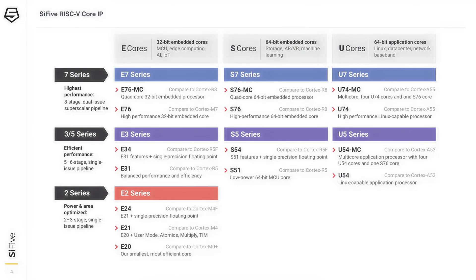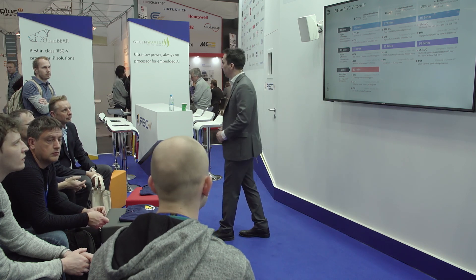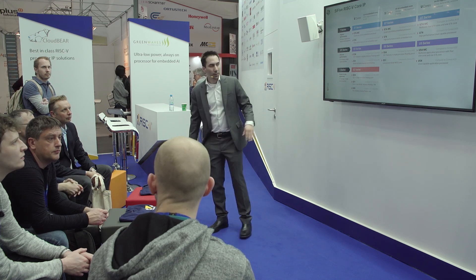This is our IP portfolio of RISC-V cores, laid out almost like a 2D matrix. We have E cores — 32-bit embedded processor families; S cores — 64-bit embedded processor families; and U cores — 64-bit application processors. The U cores add features like RISC-V supervisor mode, which supports virtual memory and by extension high-level operating systems like Linux.